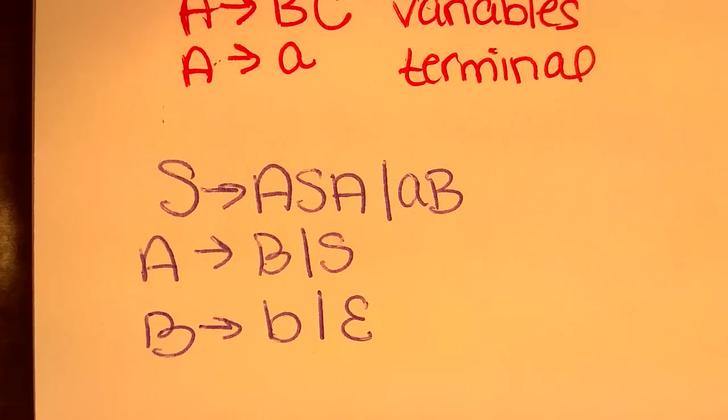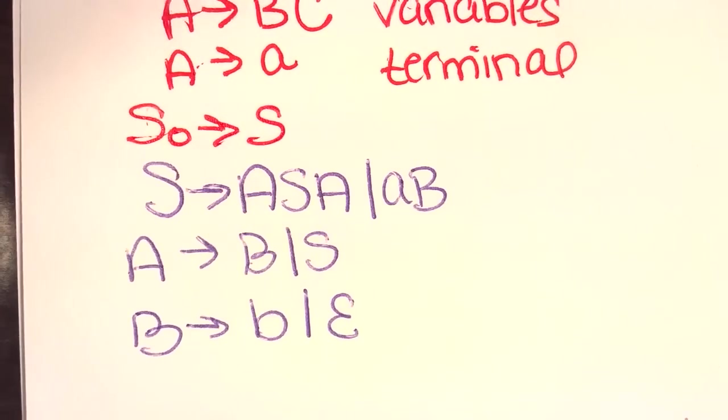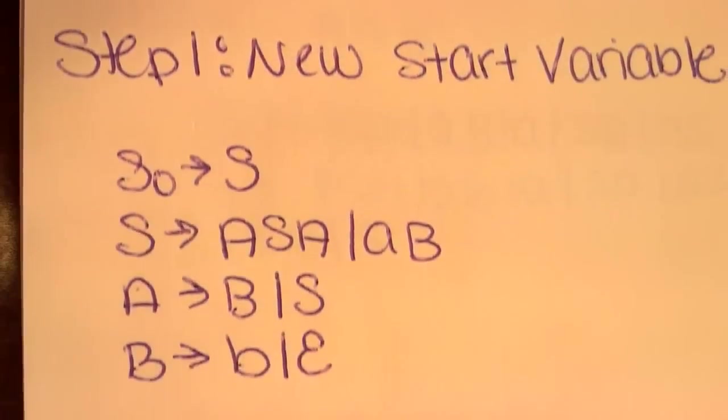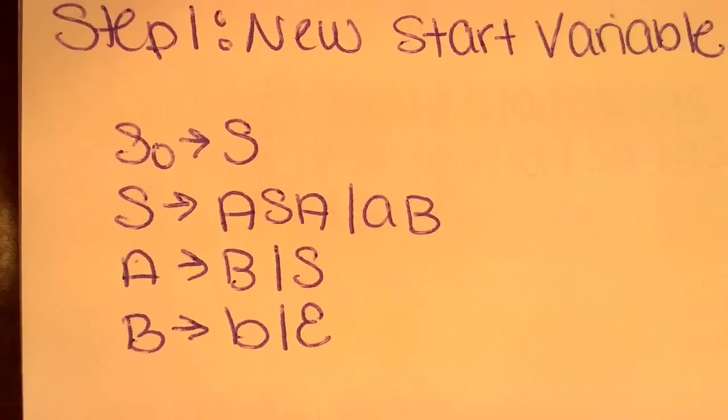The first step is to create a new start variable. To do so, all you have to do is add an S-naught points to S. Simple, right? So step one is done. So this is what our new equation looks like.